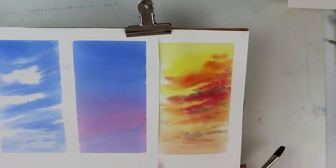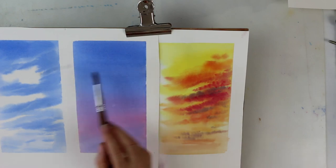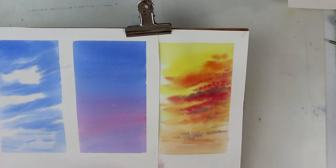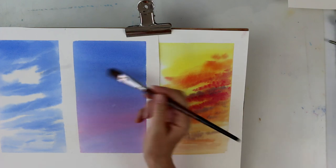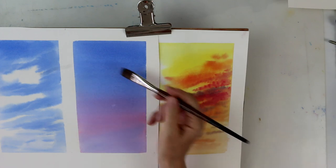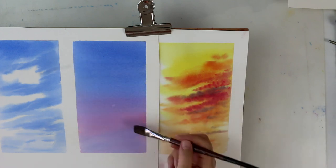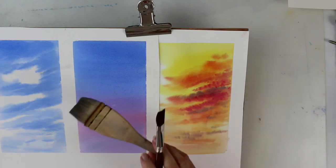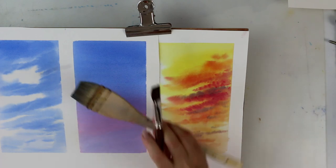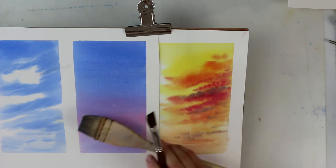Then we went on to doing a completely flat, what we call graduated wash, where you've got two colors and you put the two colors in onto wet paper and combine them together. Once again, that's where the lovely big wash brush comes in. Just a few strokes and you've got to the bottom.